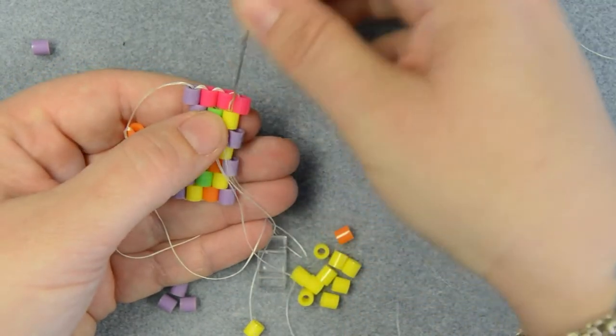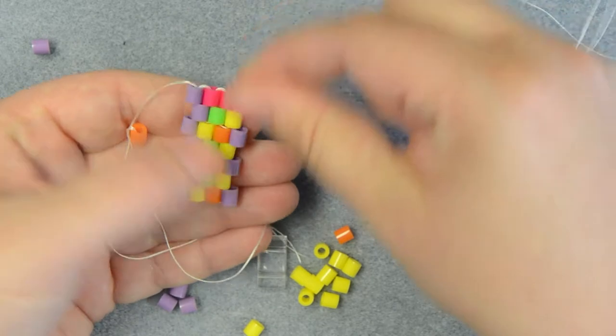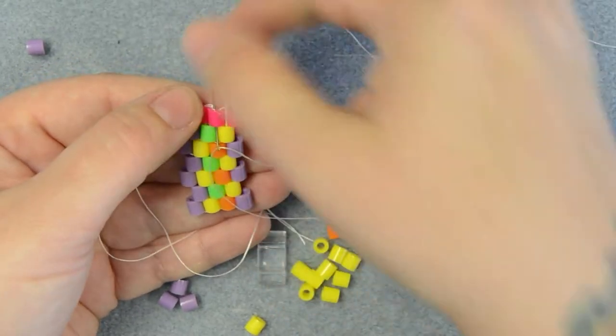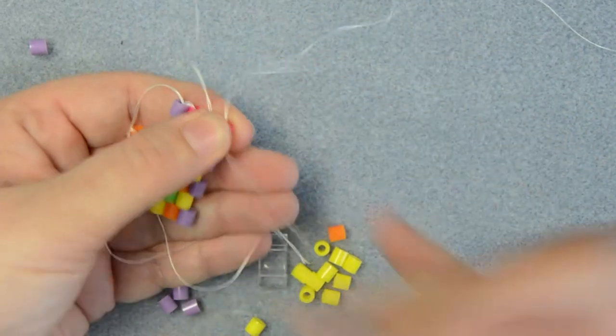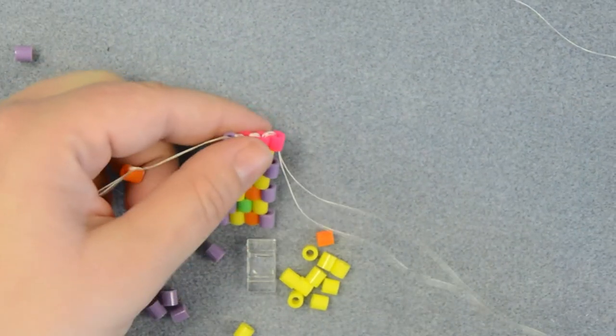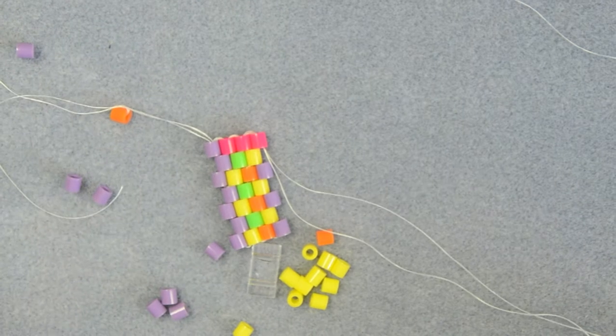Through and through that yellow, then out through the pink, and back through the bead that you added last. And that is odd count peyote.